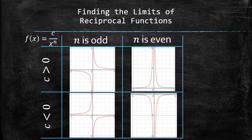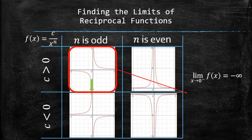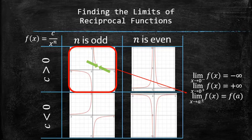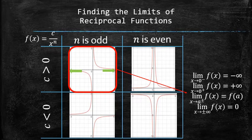What does that mean to us in terms of finding the limits? The behavior of a reciprocal function with a positive coefficient and odd degree in the denominator can be described with the following limits: f approaches negative infinity as x approaches 0 from the left, and f approaches positive infinity as x approaches 0 from the right. For any point other than 0, f approaches its output at that point, because reciprocal functions are continuous everywhere except 0. And f approaches 0 as x approaches positive or negative infinity.